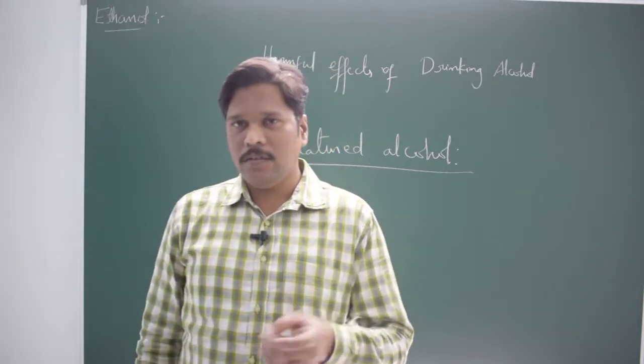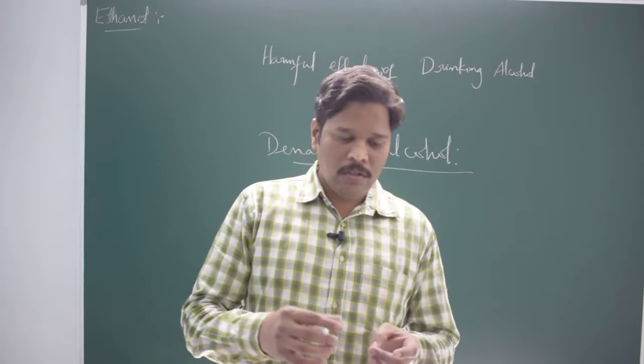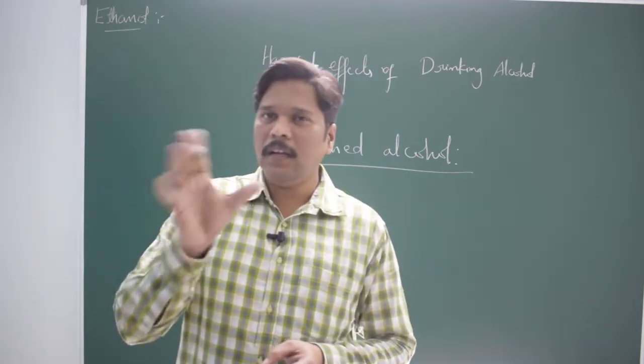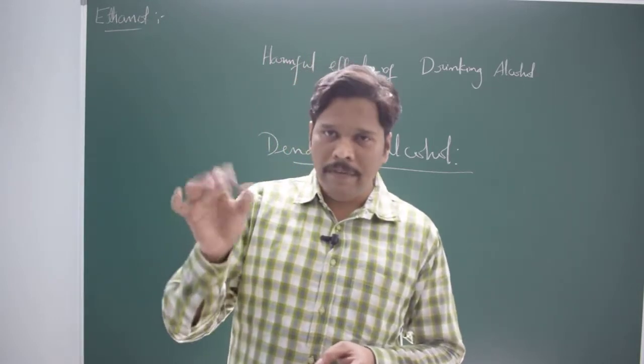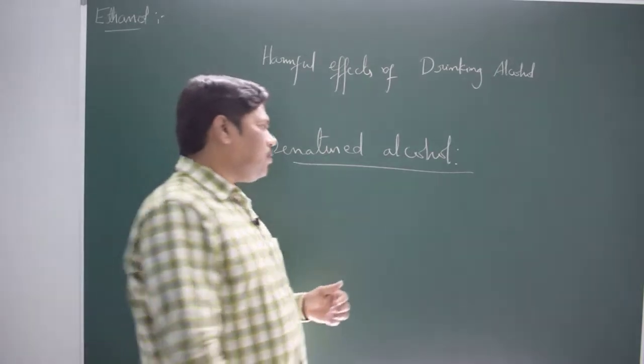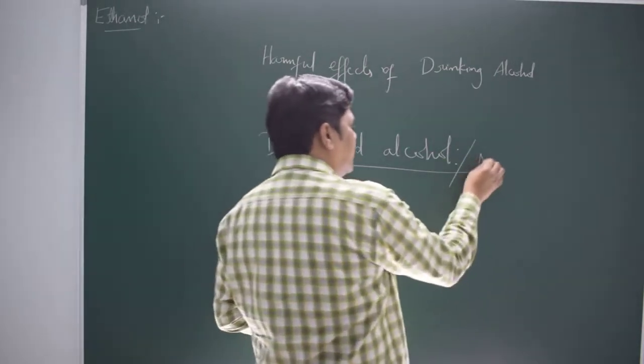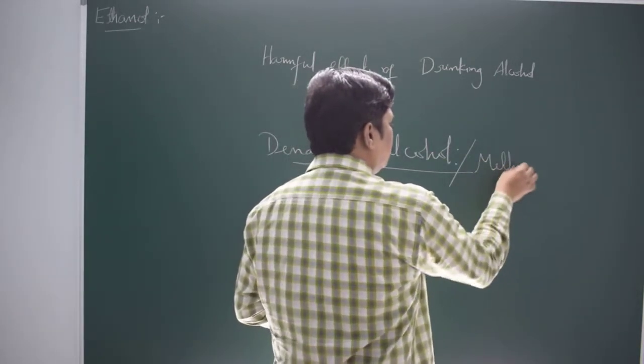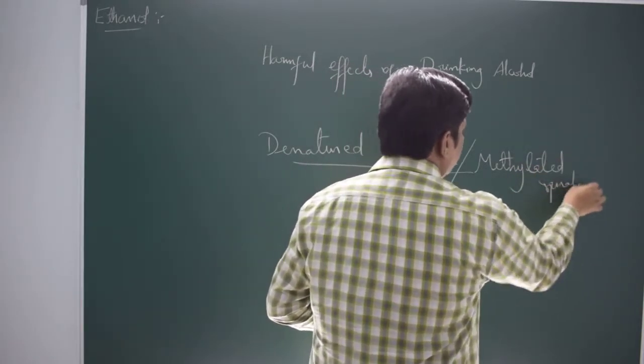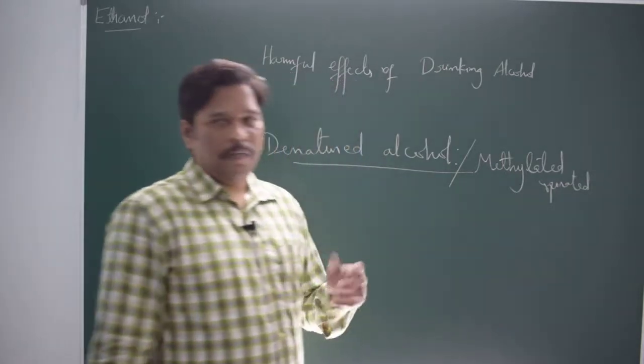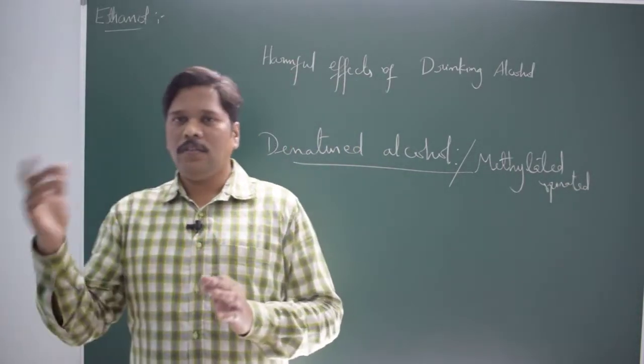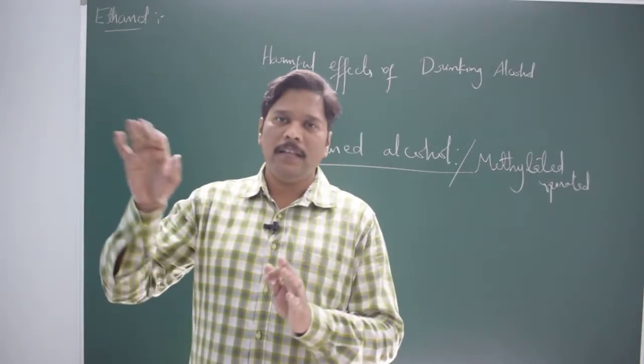Along with those substances, some dyes are also added to color the alcohol. Such alcohol which is unfit for consumption is called denatured alcohol or methylated spirit. By denatured alcohol, the government has prevented the misuse of alcohol.